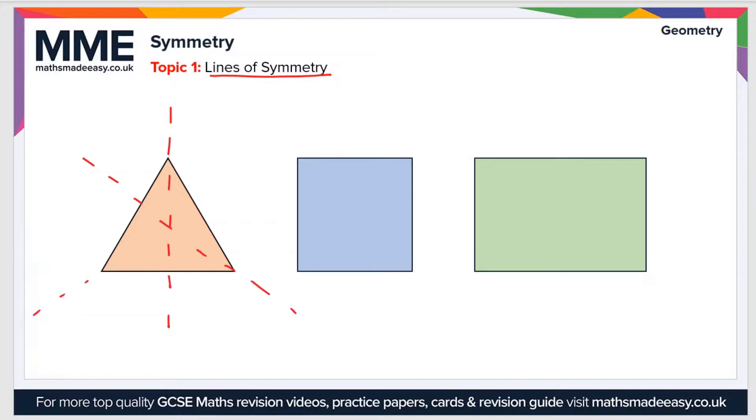Similarly, for a square there are four sides, so there are four lines of symmetry. So let's draw those on.